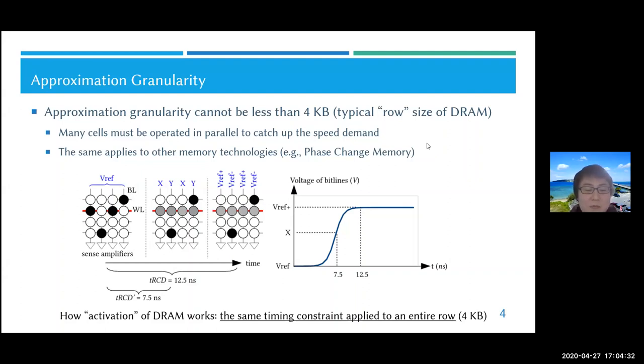But as you can see, the point is that we cannot do it bitwise, because the cells in each row, which is 4 kilobytes in a typical case, must be operated at the same time with only one timing constraint.